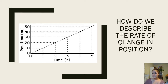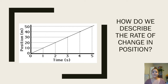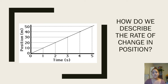In our wind-up toy lab, we talked about the rate of change in position and described that as the slope of our graph — that was the velocity, the speed of the object. For example, in this position-time graph, every second it moves 10 meters, so it's moving at 50 meters per second in the positive direction.